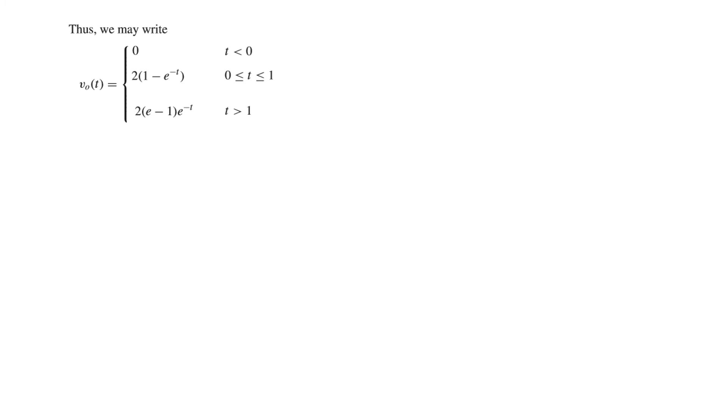So the final result looks like this. It was 0 for T less than 0. It is 2(1 minus e^(-T)) for T between 0 and 1. And it was 2e^(-1)e^(-T) or 2(e - 1)e^(-T) for T greater than 1. And now let's try to plot this.